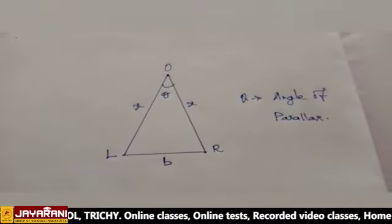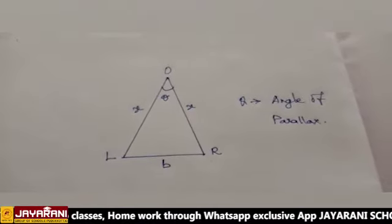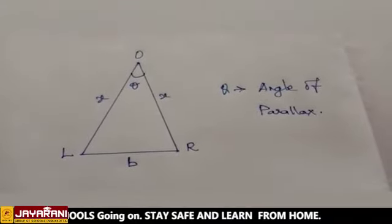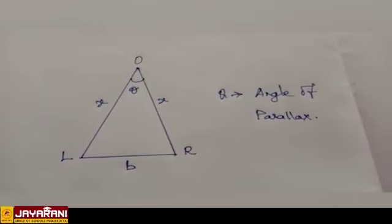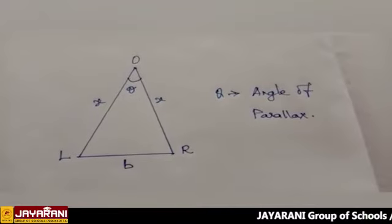And you see the same object O by right eye keeping your left eye closed. By this activity, we clearly know the position of an object is changed when you view the object by your right and left eye.